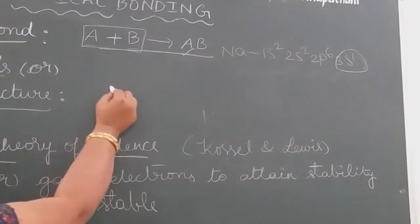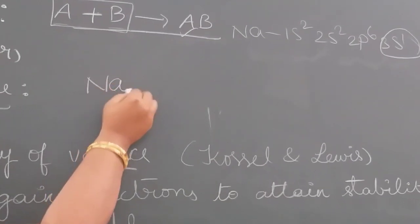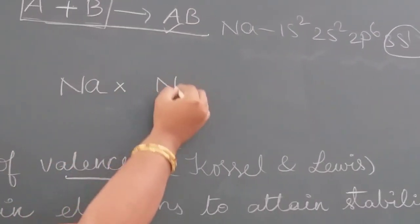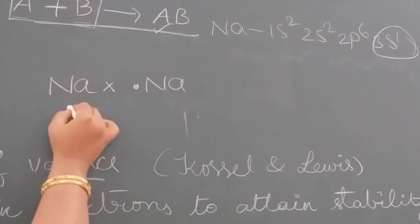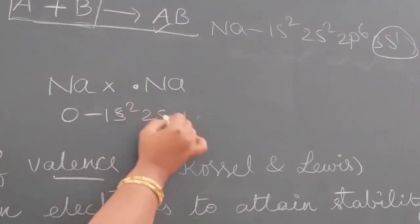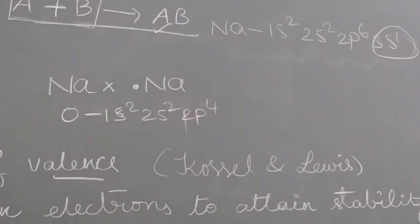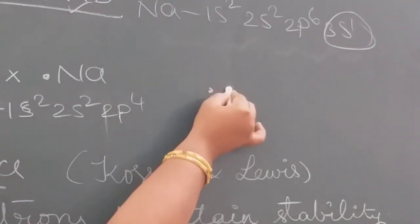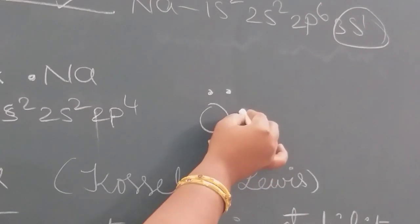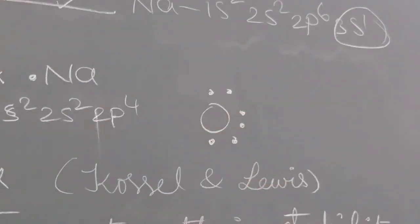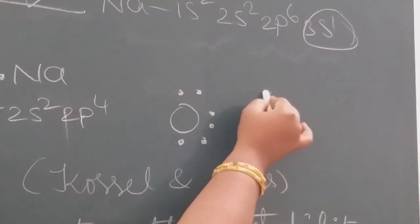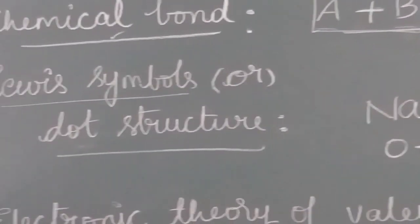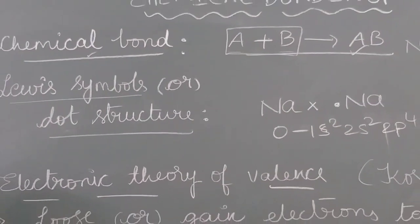For example, take sodium — he showed the valence electron with a cross or dot. For oxygen, the electronic configuration is 1s2, 2s2, 2p4. There are 6 electrons in the valence shell, so he showed them as 6 dots around the symbol. This is called Lewis symbols or dot structure. This helps show how a bond will form with the valence electrons.